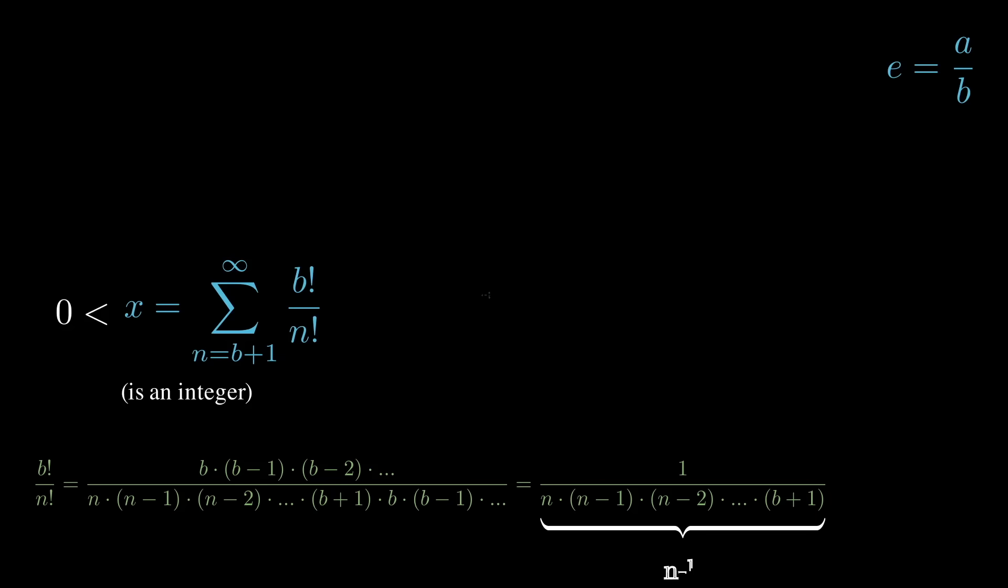If you count those terms, we'll have n minus b of them, b plus 1 being the smallest term, we can actually write a bound for this. This quantity is going to have to be less than or equal to if every term in that product was b plus 1, since b plus 1 is the smallest one.